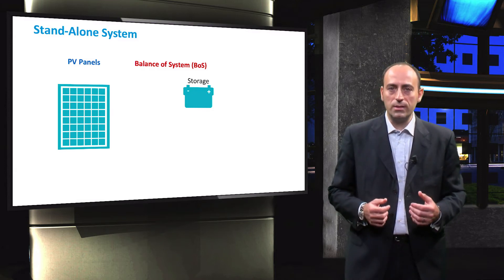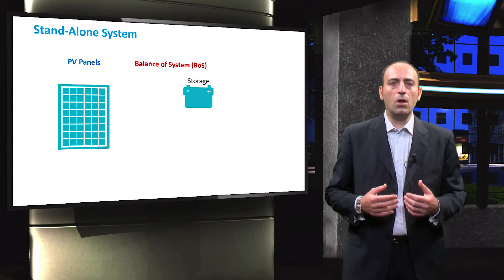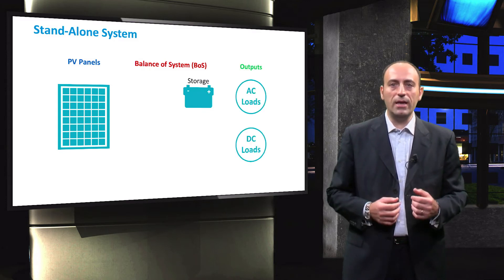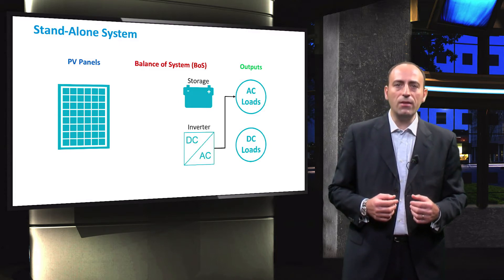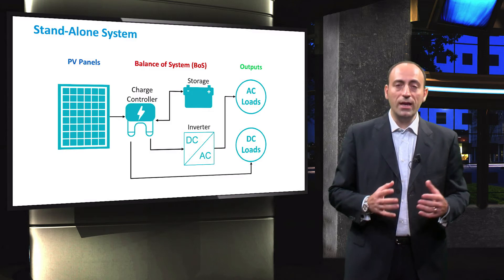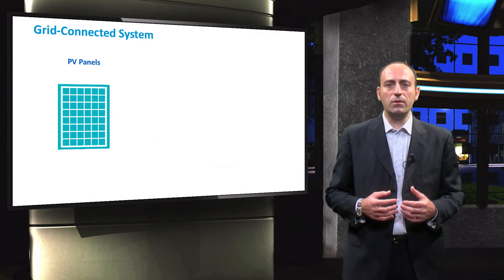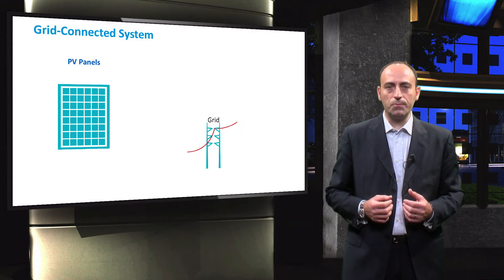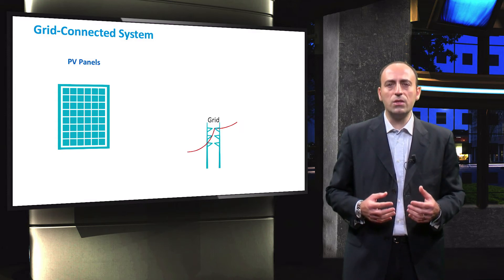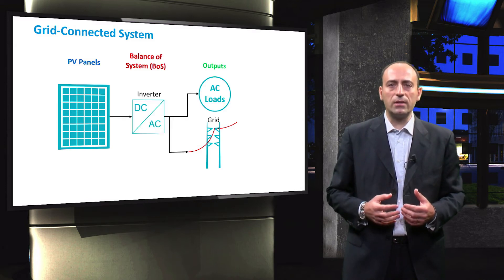Typical components in a standalone PV system include the PV panels, loads both DC and AC type, the inverter that connects to the AC loads, and the charge controllers. On the other hand, grid-connected PV systems have the distribution grid as a backup, and are typically installed in buildings. They consist of the PV panels, the loads, and the inverter that connects the AC loads and the PV panels.